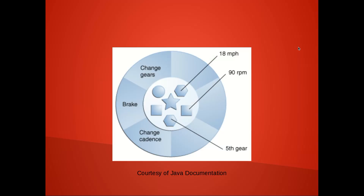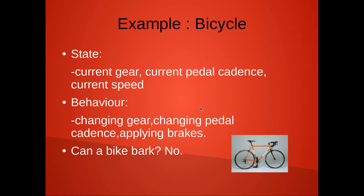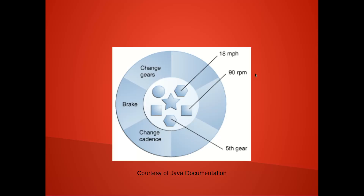We have this example from the Java documentation. Back to our bicycle diagram — the inside represents our state, and the outside represents our behavior. As you can see, we have a state of 18 mph, 90 rpm of cadence, and fifth gear. The outside is our behavior, and behavior is always related to the state of that object. They cannot be related to the state of other objects — for example, bicycle behavior cannot have a state of dog because those are different objects.